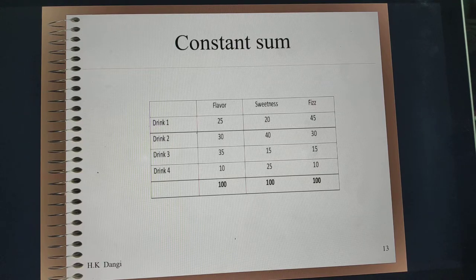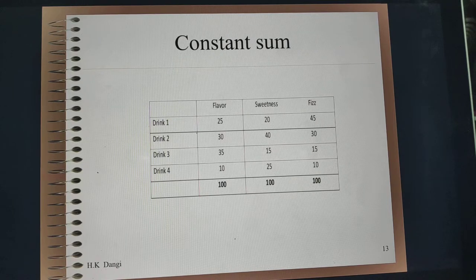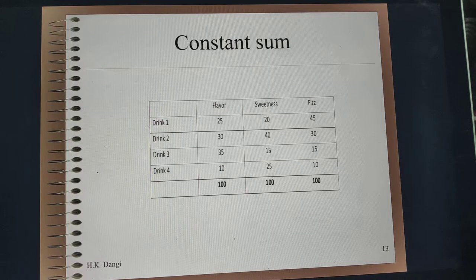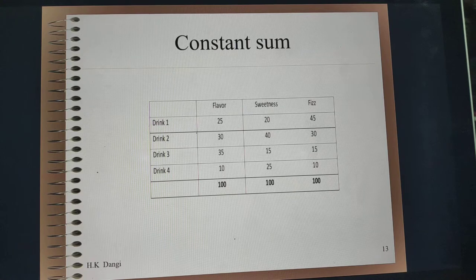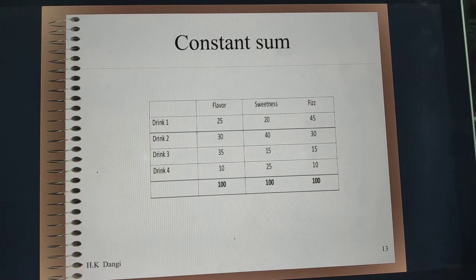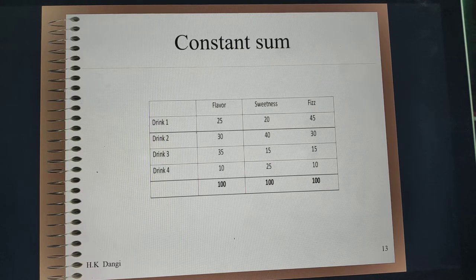Another type is the constant sum scale. Respondents are asked to assign weightages or allocate marks based on a predefined total — in this case, 100 units divided among four different drinks. Drink one scored maximum on fees, drink two is good in sweetness, drink three is preferred for flavor, and drink four has the highest in sweetness. This technique is essentially useful when doing segmentation studies where you want to segment objects based on customer preference.